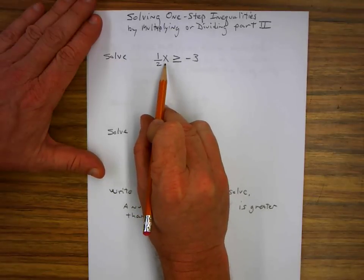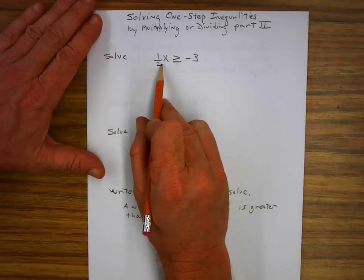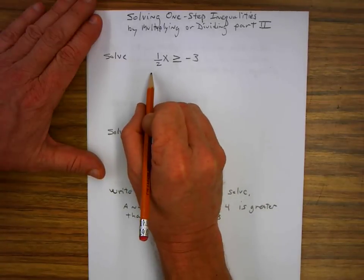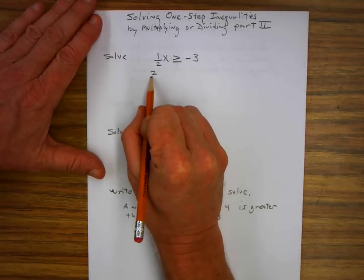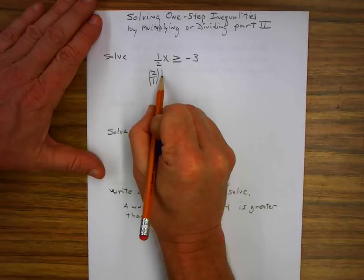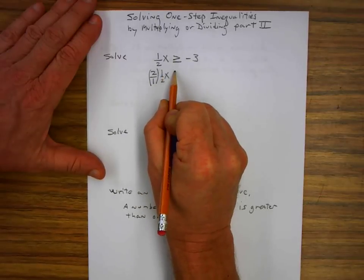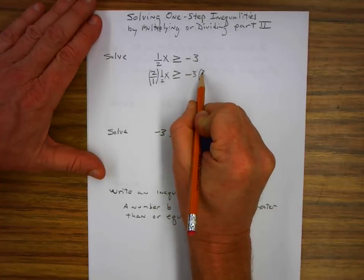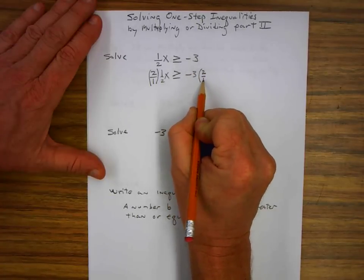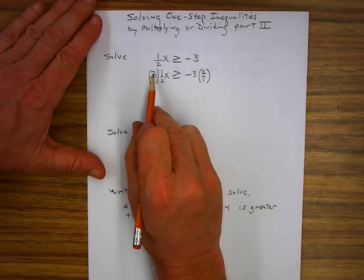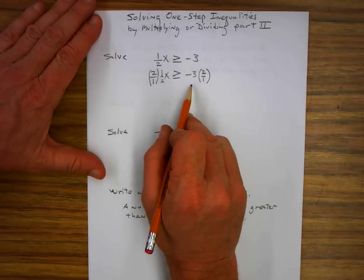To isolate the variable x, I need to multiply by the reciprocal of one-half, which is two over one, on both sides. So I write two over one times one-half x greater than or equal to negative three times two over one. I leave the sign alone because I'm not multiplying or dividing by a negative number.